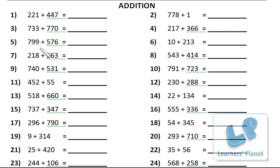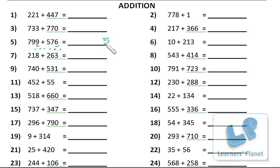Let's take a problem. First, 9 plus 6: keep 9 in your mind then count — 10, 11, 12, 13, 14, 15. Use your fingers and count 6 after 9 — 10, 11, 12, 13, 14, 15. Write 5 of 15 at the ones place and carry 1. Then add the tens place numbers.